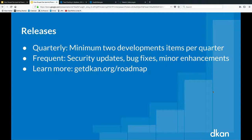We release on a quarterly basis, and anytime there's a Drupal core update. You are supported using DKAN even if you're not a client of ours. Security updates we'll push right away — so for the next Drupal security event, you can go get a new release of DKAN that has the security patch. You can always learn more at getDKAN.org/roadmap where our roadmap and all developments are public and available.